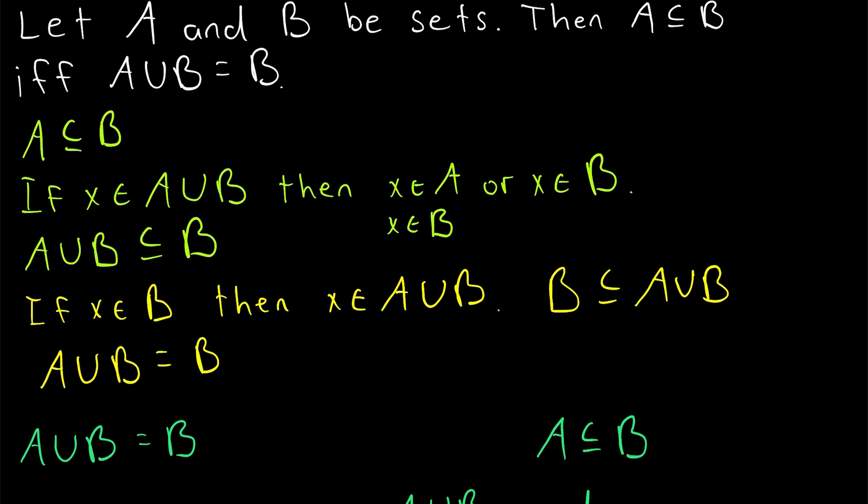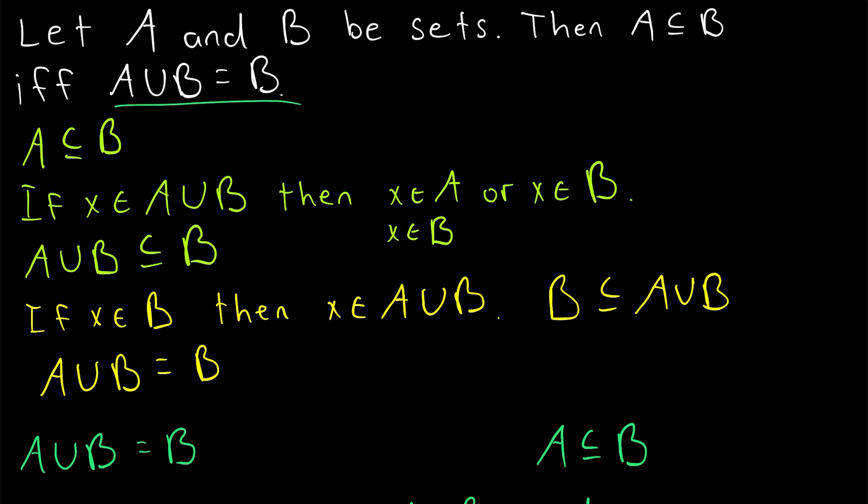We just showed that if A union B is equal to B, then A is a subset of B. Thus, if A and B are two sets, then A is a subset of B if and only if A union B is equal to B.